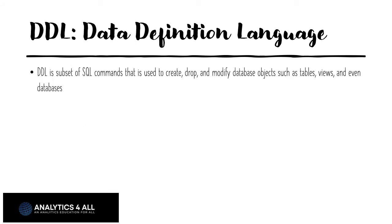So DDL, Data Definition Language, is used to do things like create and drop objects. What's an object? An object is a table, a view, an index, even a database. It's a physical container — it's not the data itself, it's where the data sits, where the data resides. So keep that in mind: DDL is containers for the data. We have terms like create, alter, and drop. Drop is a DDL language term.